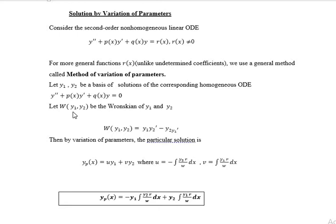Now we can calculate the Wronskian of the given functions y1 and y2. W(y1, y2) equals the determinant with first row y1, y2 and second row y1', y2'. Opening the determinant, the Wronskian value is y1·y2' minus y2·y1'.